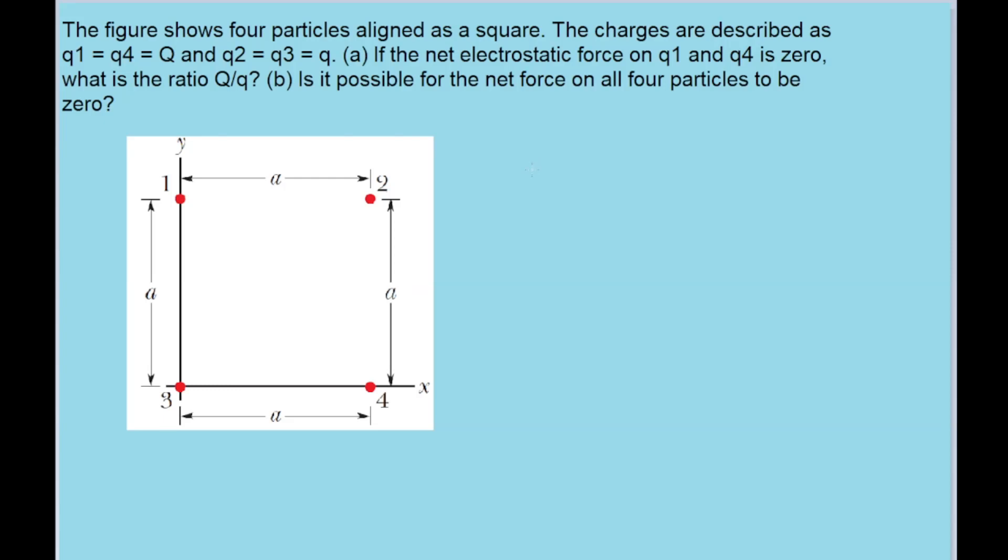In this problem we have an arrangement of four charged particles and we want to find information about the ratio of the charges on them using the information given to us in the problem. It states that charges one and four have an equal charge to one another called big Q and charges two and three also have a charge equal to each other called little q.